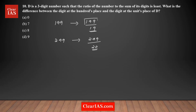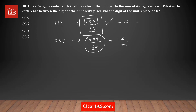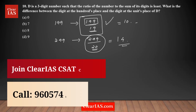The numerator increases by 100 between 199 and 299, while the denominator increases by only 1. So definitely 199 gives the smallest ratio. You can check: 299 divided by 20 is around 14 point something, while 199 divided by 19 is around 10 point something. So 199 clearly gives the smallest ratio compared to the others.